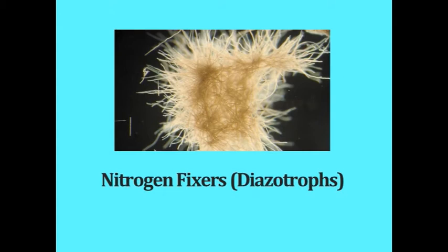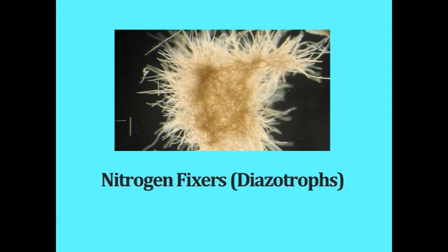The process of biological nitrogen fixation or diazotrophy can be carried out by only some microorganisms like bacteria and cyanobacteria. These organisms which can carry out nitrogen fixation are called nitrogen fixers or diazotropes. The nitrogen fixers may be symbiotic or free-living, which are also called non-symbiotic.